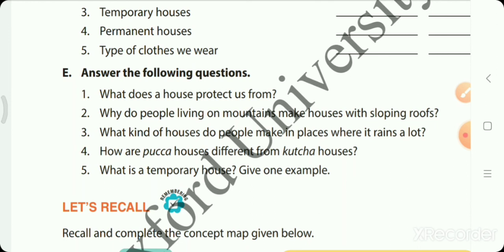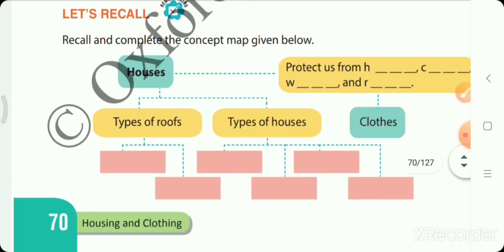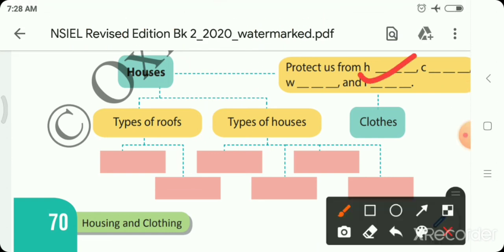Okay students, our chapter is completely over. Here are the types of roofs - slopping and flat. Types of houses include igloo, caravan, stilt house, and boat house.